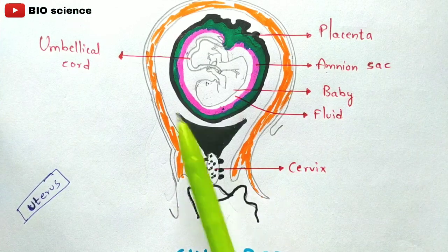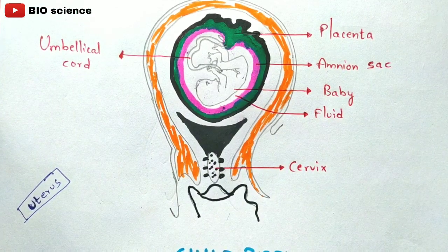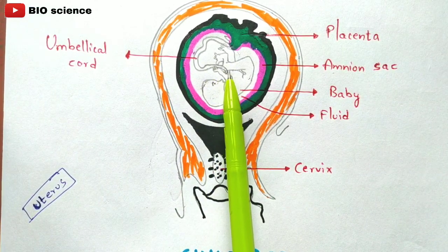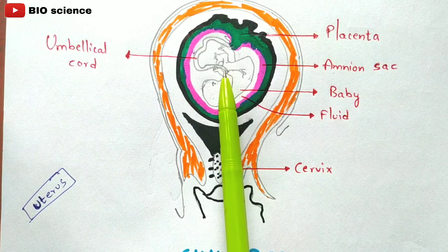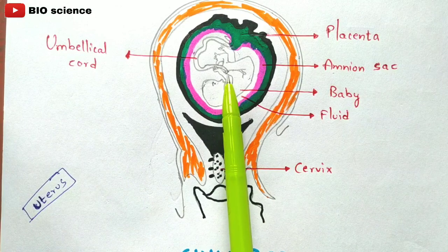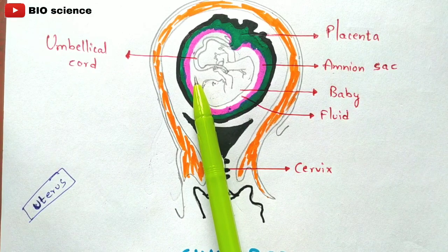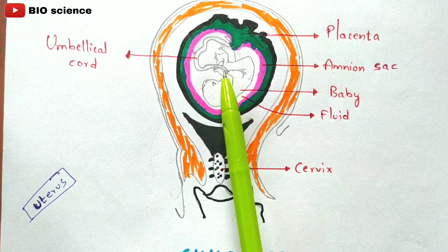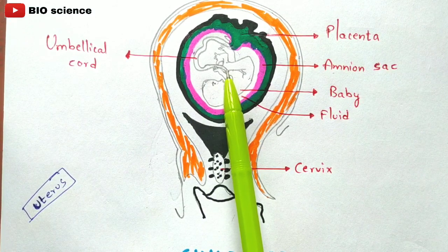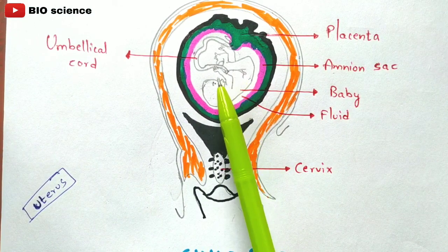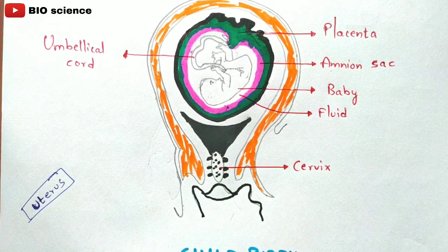Once the baby is delivered, the umbilical cord is cut by the doctors. However, a small region of the umbilical cord is left at the navel of the baby, and over some days that remaining piece of umbilical cord gets converted into the navel.